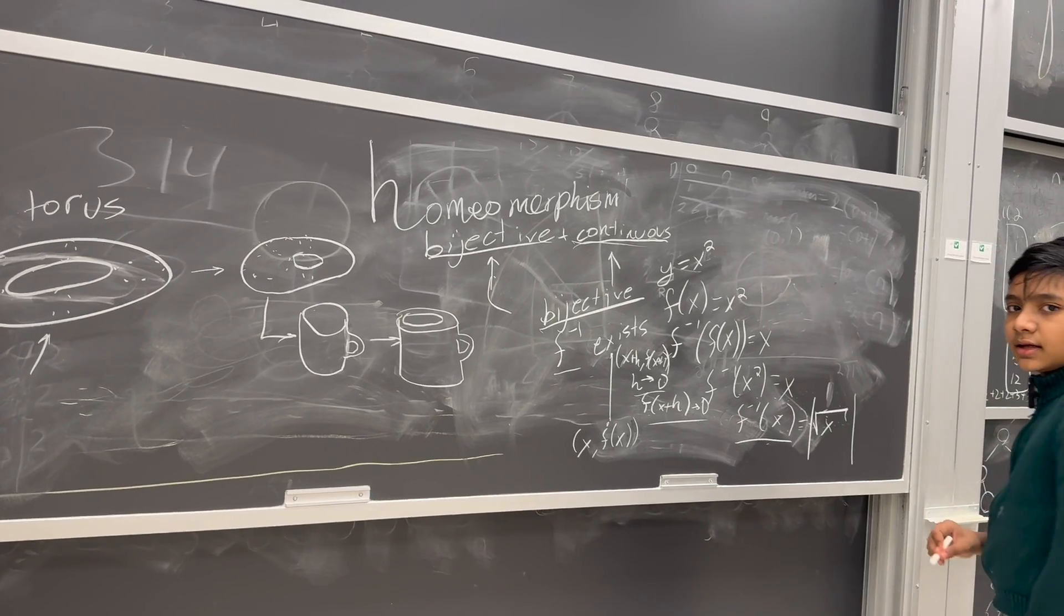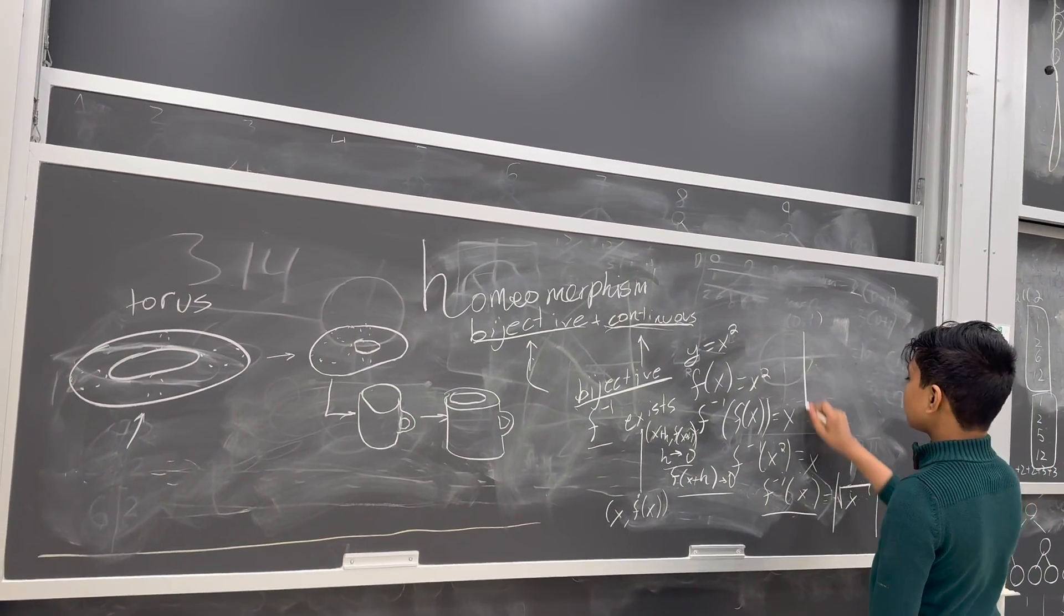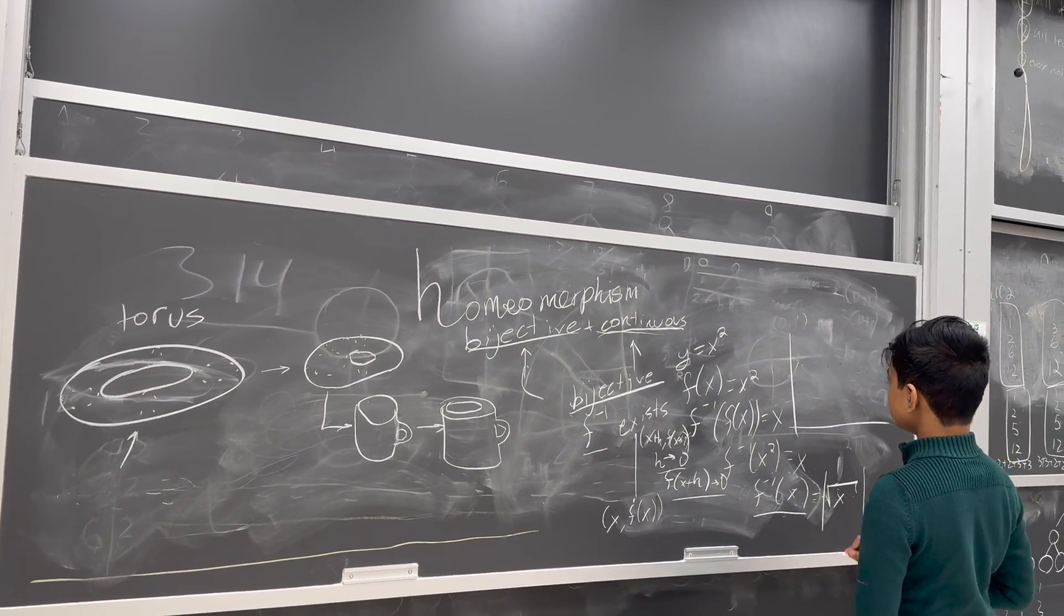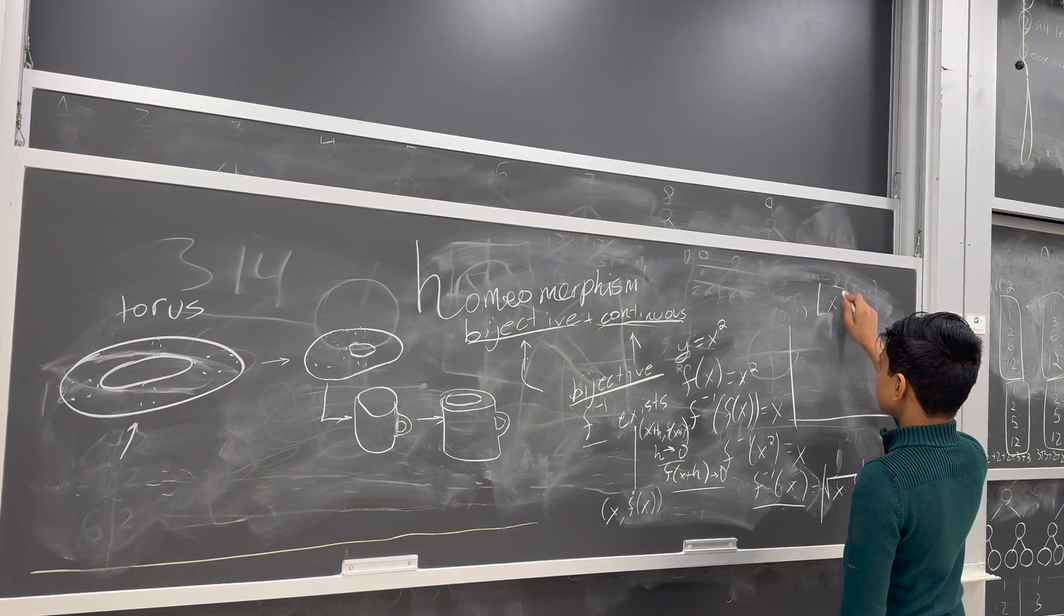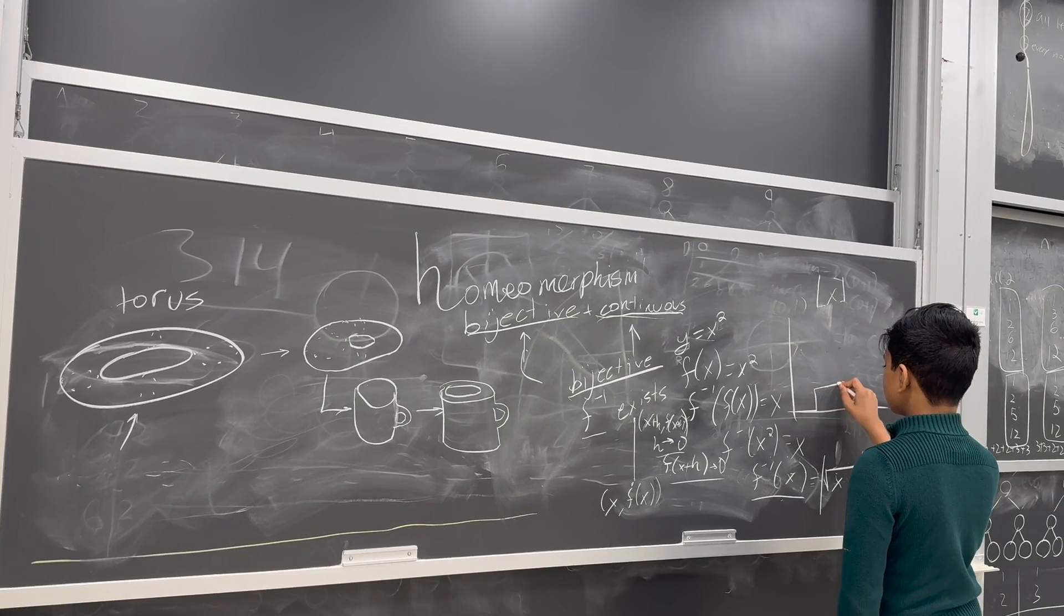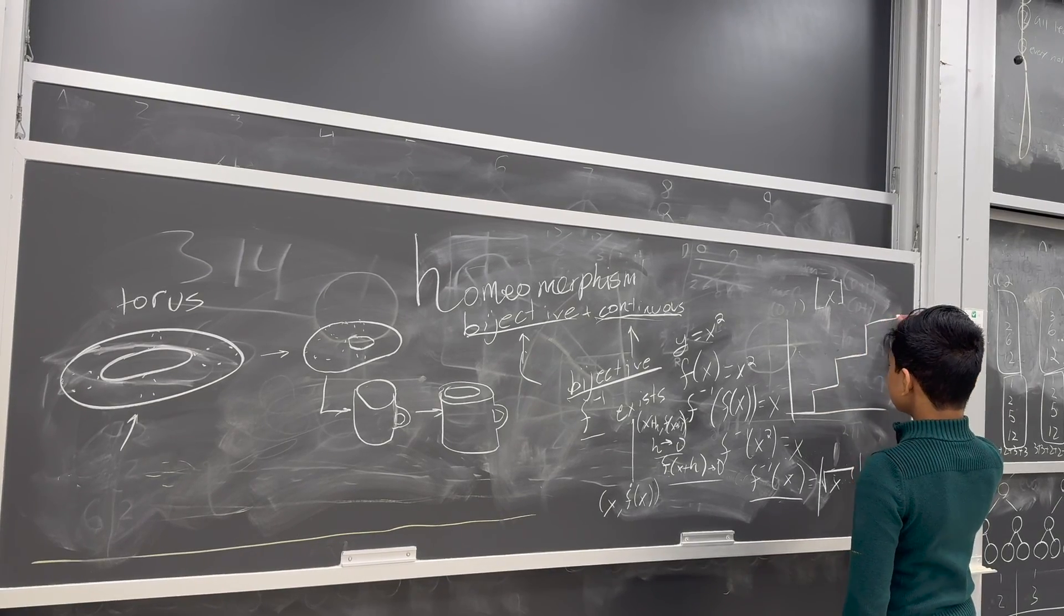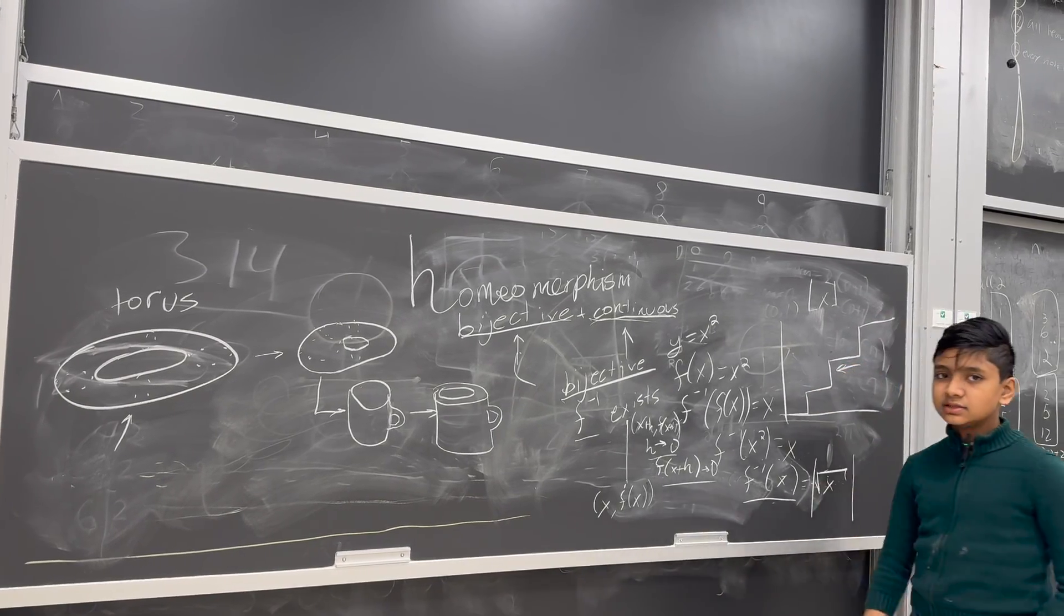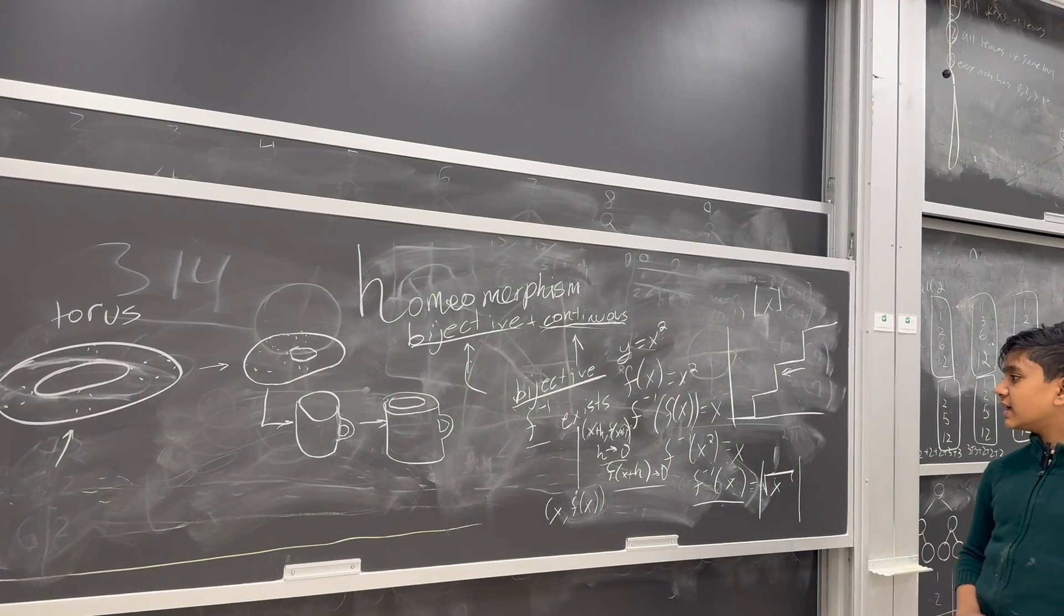But it doesn't in something like this, like what we call the Heaviside step function, or the floor function, for example. The floor function looks like this, like a little staircase. And these little jumps are going to make it discontinuous.